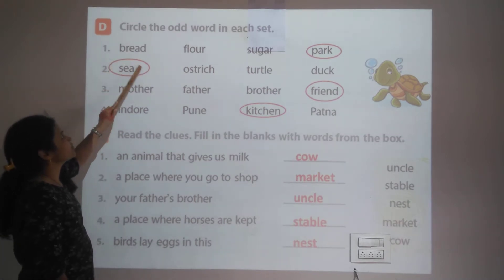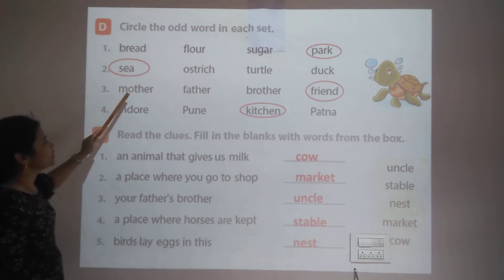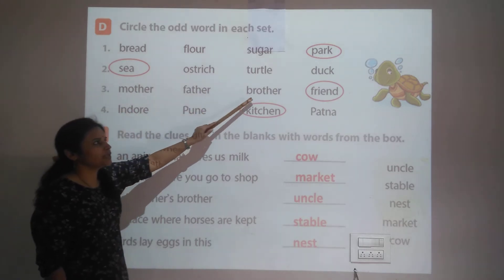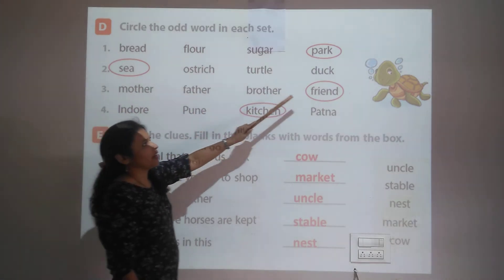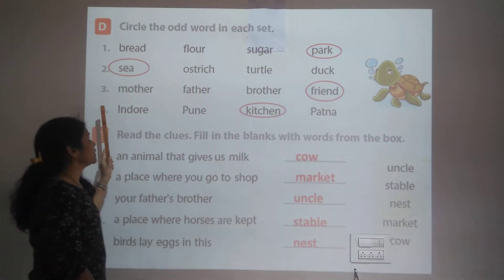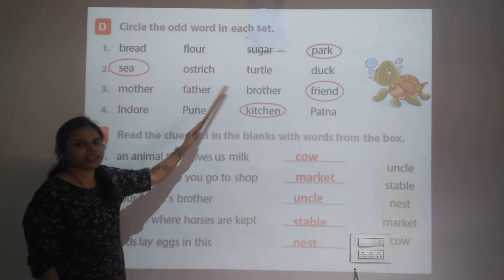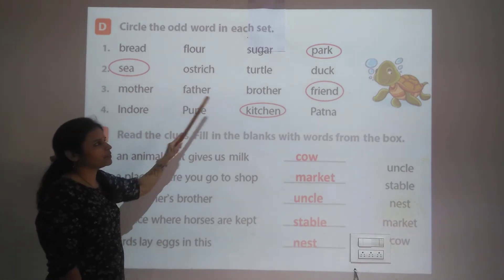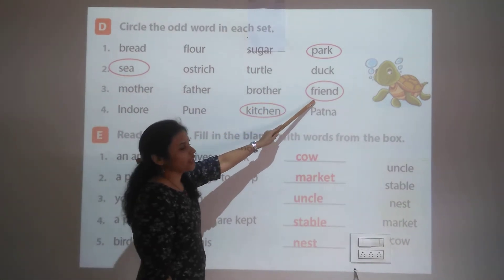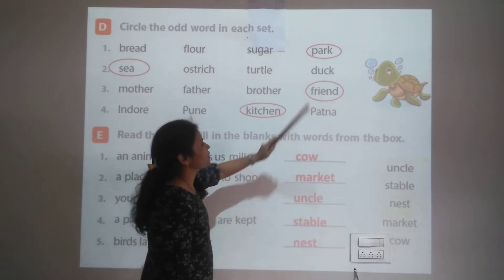The third set: mother, father, brother, and friend. In this set, mother, father, and brother are our family members. But 'friend' is the odd one. We have to circle friend.